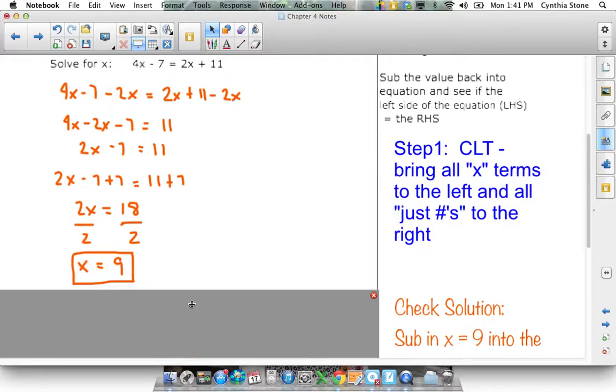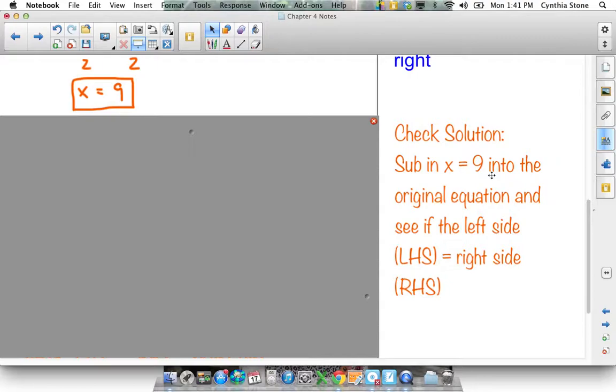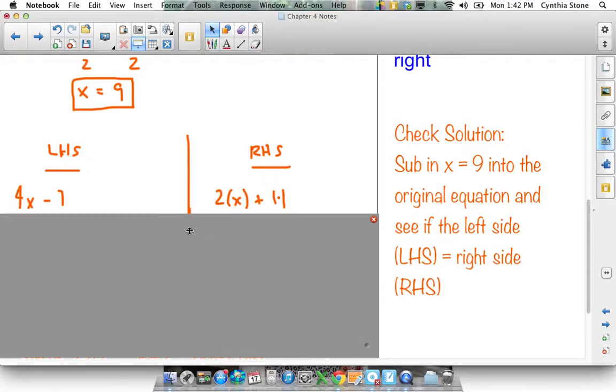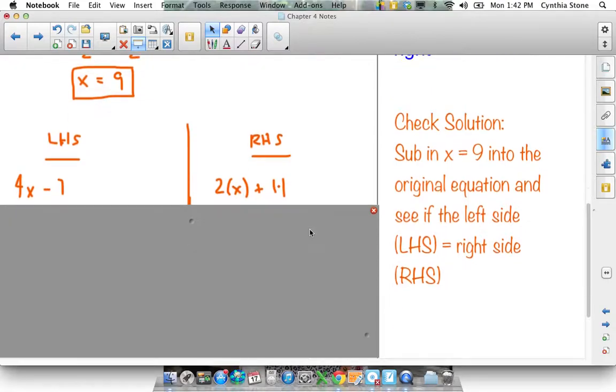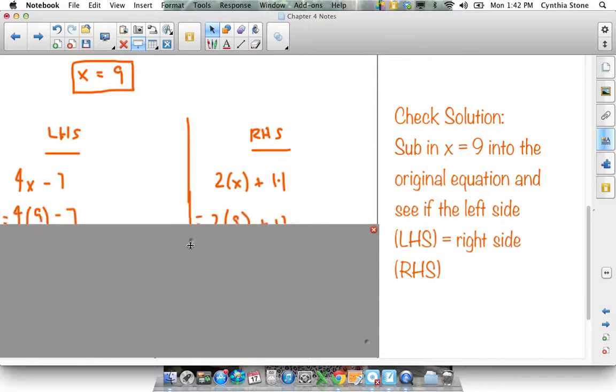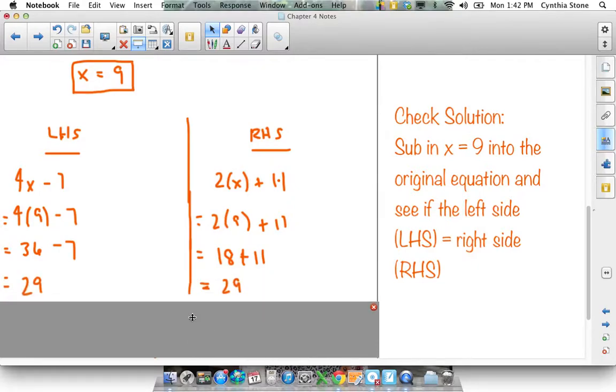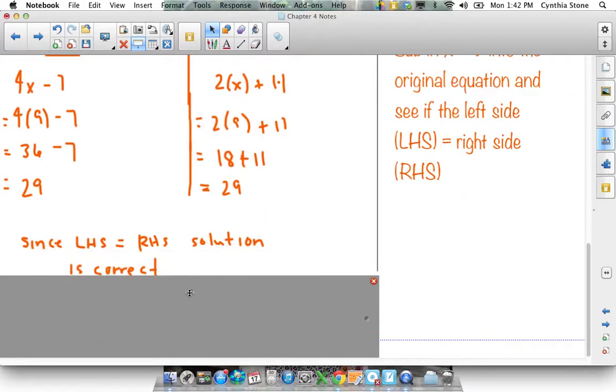Now we're going to check that solution. What I mean by that is you sub in x equals 9 into the original equation, to the very first equation that was written in the question. And just see if the left side, left-hand side (LHS is what I mean by that), equals the right-hand side when x equals 9. So I say left-hand side of the equation is 4x minus 7, and the right-hand side of the equation was 2x plus 11. So then I'm going to sub in x equals 9. That equals 4 times 9, instead of x I write 9, minus 7. And same thing here, 2 times 9 plus 11. So I end up with 29 on the left and 29 on the right. So I can say yes, my answer is good.